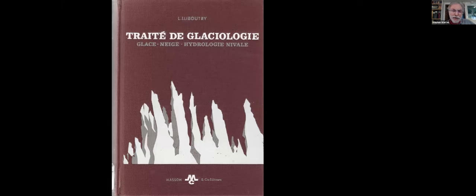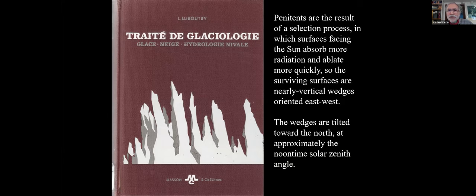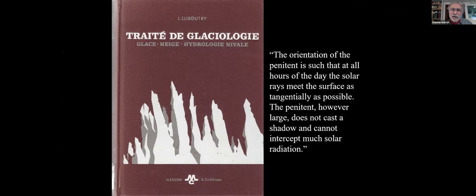Lliboutry was so intrigued by these snow structures that he put a drawing of them on the front cover of both volumes of his two-volume treatise of glaciology. This diagram shows a lot about how they're formed. They're the result of a selection process in which surfaces facing the sun absorb more radiation and ablate more quickly. The surviving surfaces are nearly vertical wedges oriented east-west, tilted in the southern hemisphere toward the north at approximately the noontime solar zenith angle.